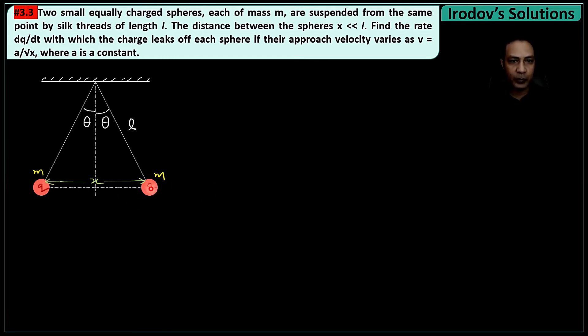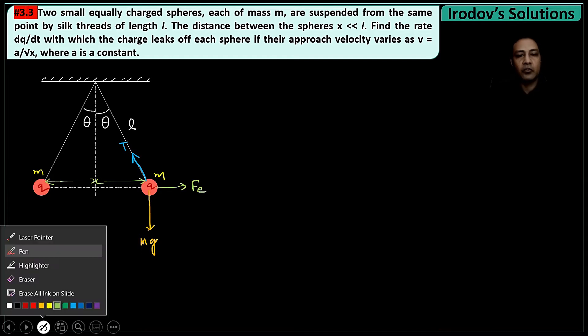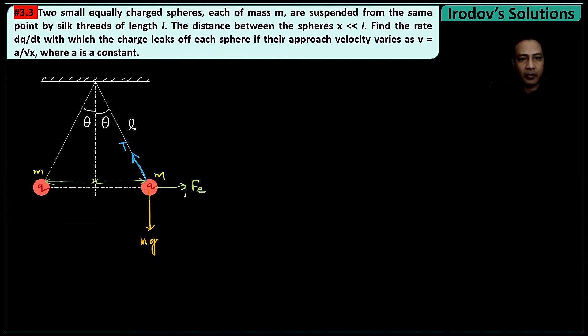Now at this moment suppose they are in equilibrium. At the position of equilibrium, let me draw the FBD of either charge. On this charge there will be its weight mg and a tension on the string T, and obviously electrostatic repulsion between the charges. The electrostatic repulsion on this charge is Fe. If it is in equilibrium, the resultant of mg and Fe must be equal and opposite to the tension so that the net force is zero.